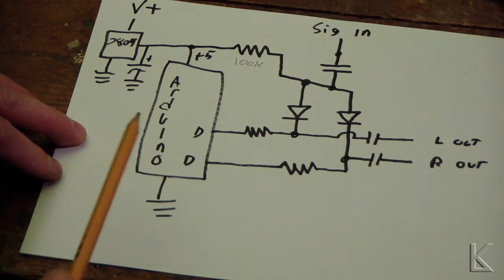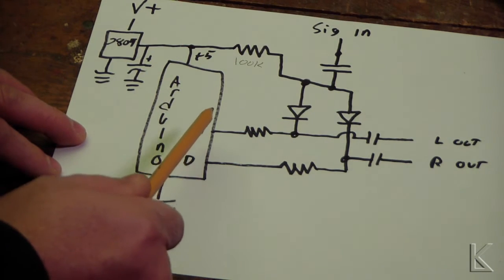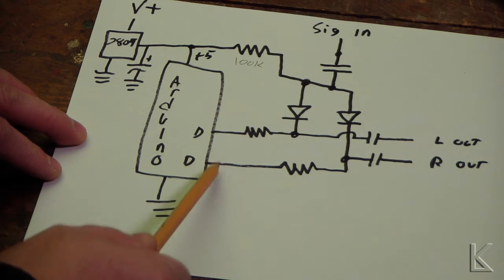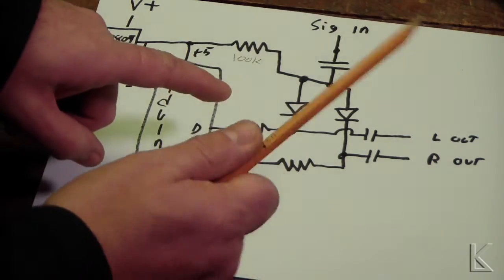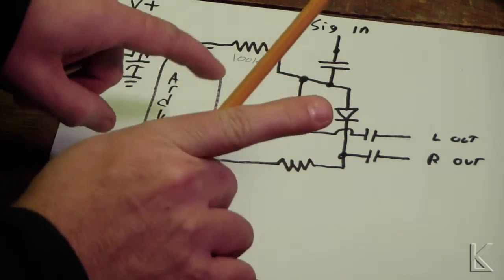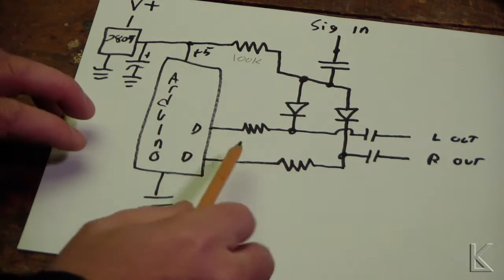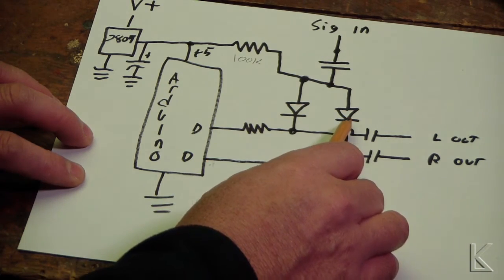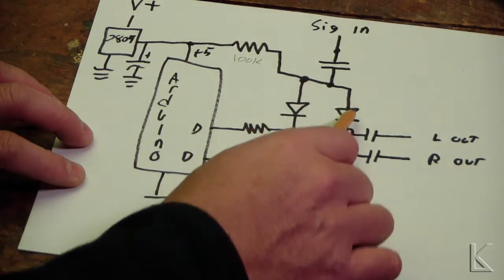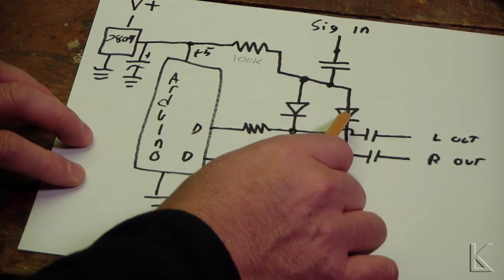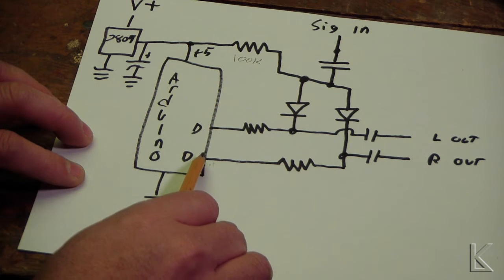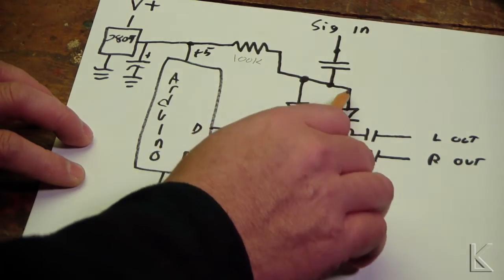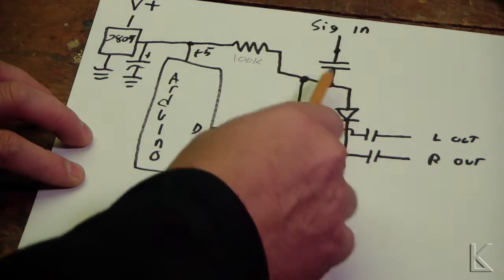The Arduino sketch simply alternates two pins: one pin high and the other low for one second, then they swap — back and forth. When a pin goes high (5 volts), we have 5 volts on both sides of the diode, so it does not turn on and the signal is blocked. When a pin goes low (0 volts), we have 0 volts on that side of the diode, the diode turns on and begins to conduct, and our signal rides through.